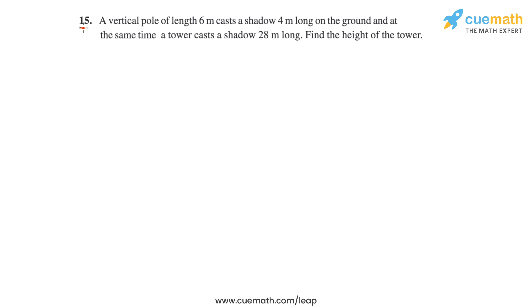Question 15 of this exercise says: a vertical pole of length 6 meters casts a shadow 4 meters long on the ground, and at the same time a tower casts a shadow 28 meters long. Find the height of the tower.